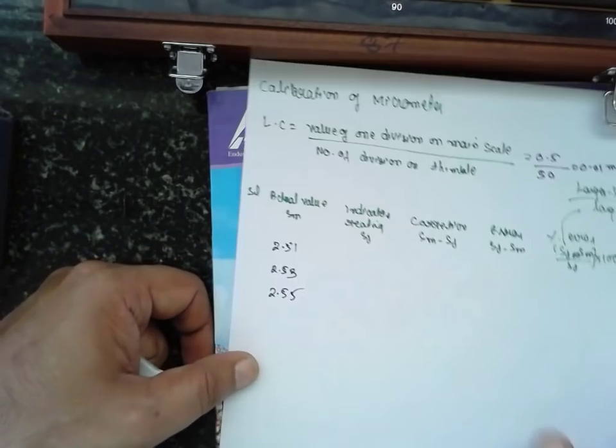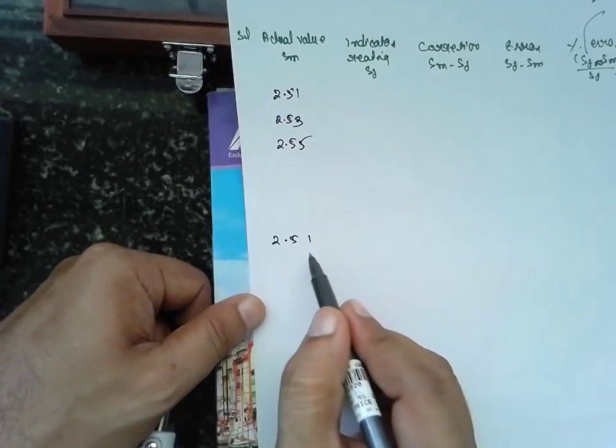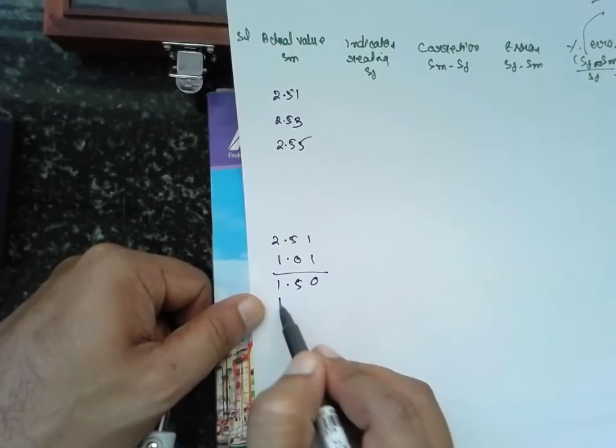Then I will go for built-in phenomena. 2.51, I will make this one as 0, so 1.010. 5 will be as it is: 1, 1.5.